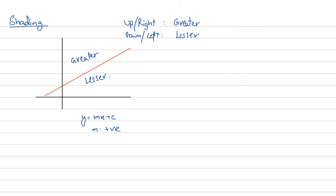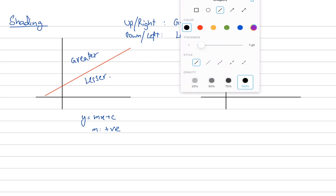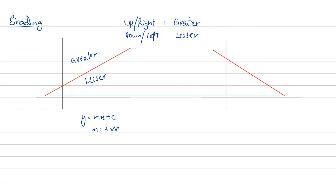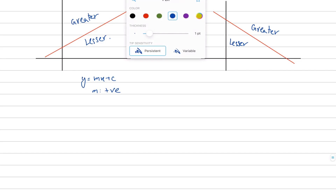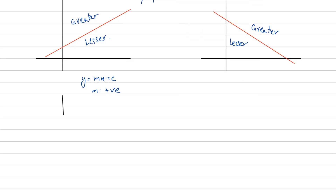The second case is where you have a negatively sloping line. If you have a line that is falling, remember that anything above or towards the right is greater. So the region above this line is going to be the greater than region, and the region below this line is going to be the lesser than region.